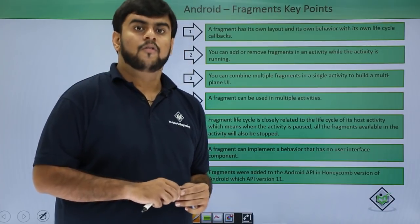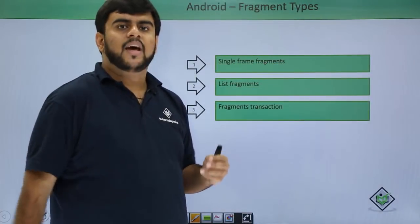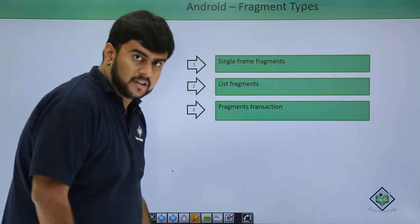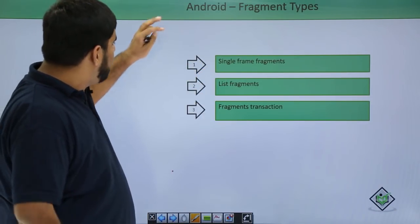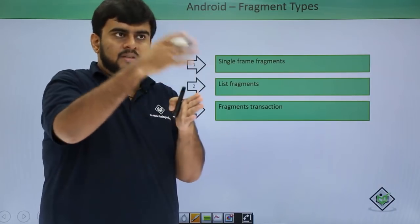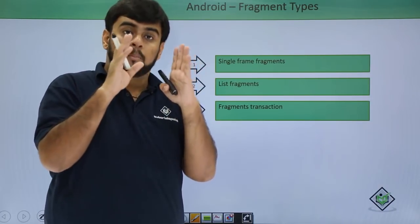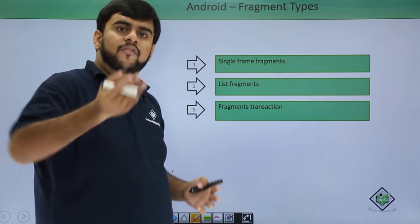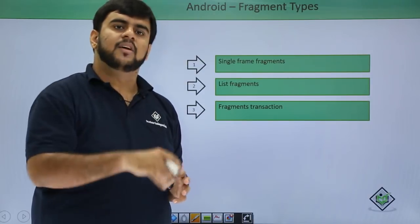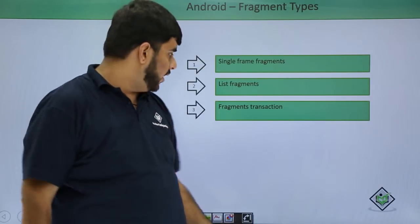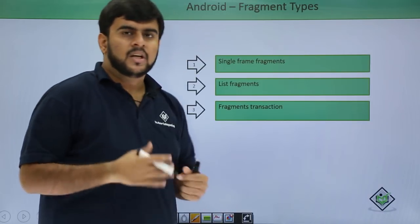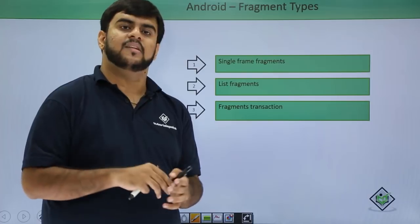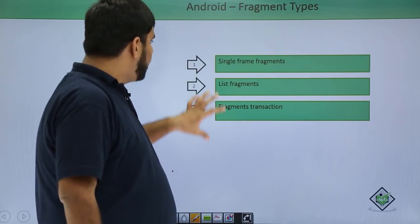Now let's look at the types of fragments. There are basically three types: single frame fragments, list fragments, and fragment transactions. In a single frame fragment there is only one frame — you can change fragments but it's all in one activity. In list fragments, as seen on the first page, there is a list and you navigate to the next item all within one activity. In fragment transactions, when transitioning from one fragment to another, data passing is handled.